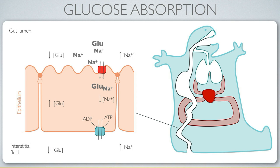Sodium-potassium ATPase is the motor that creates a source of potential energy — the sodium concentration difference. That potential energy on the apical surface of the cell is then captured by the co-transporter.